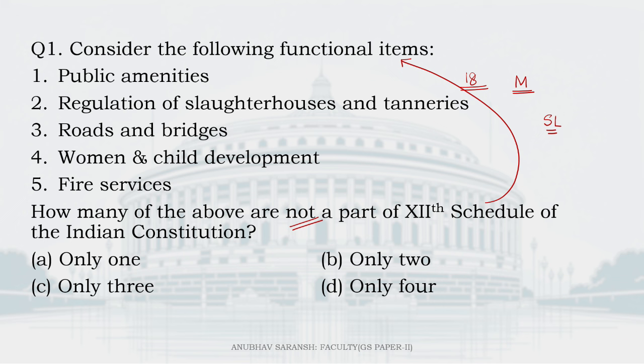What kind of topics are there? The 12th Schedule contains topics like urban planning including town planning, public amenities, planning of land use, construction of buildings, economic and social developmental planning, roads and bridges, fire services, public health, sanitation, solid waste management, and safeguarding the interests of weaker sections including handicapped and mentally retarded.